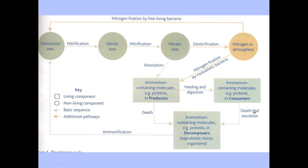Ammonium containing molecules and proteins are also found in consumers. Consumers are things which eat plants, so those would usually be animals. This box here talks about decomposers — they are saprobiotic bacteria. They are the things that break down the living tissue found in plants or consumers, and they do that post death or excretion. Excretion is the removal of waste or faeces, and decomposers will physically break that down.